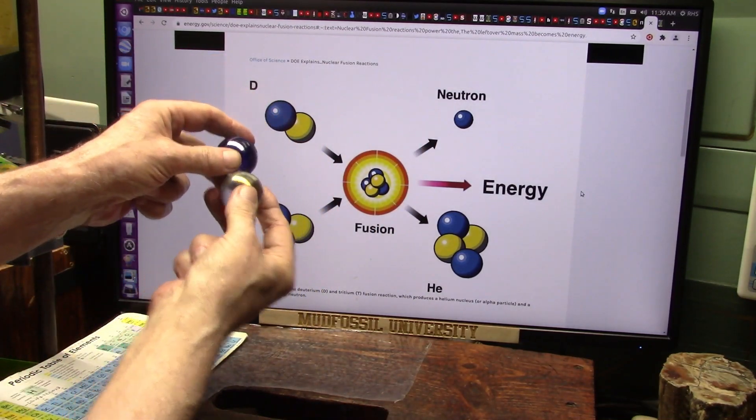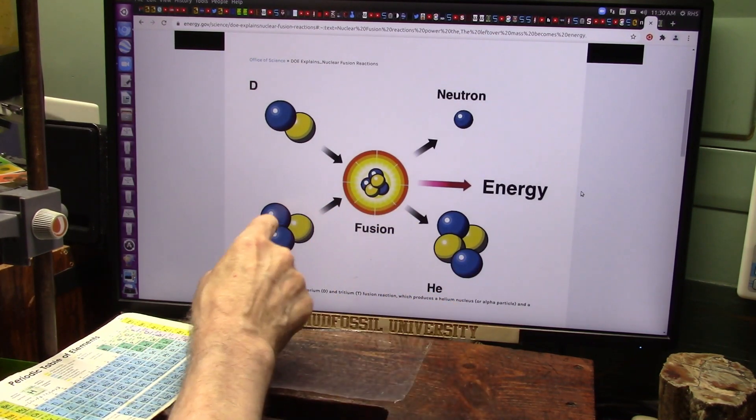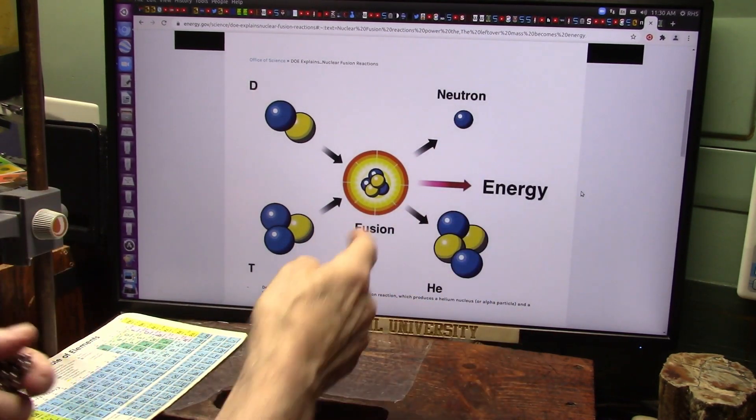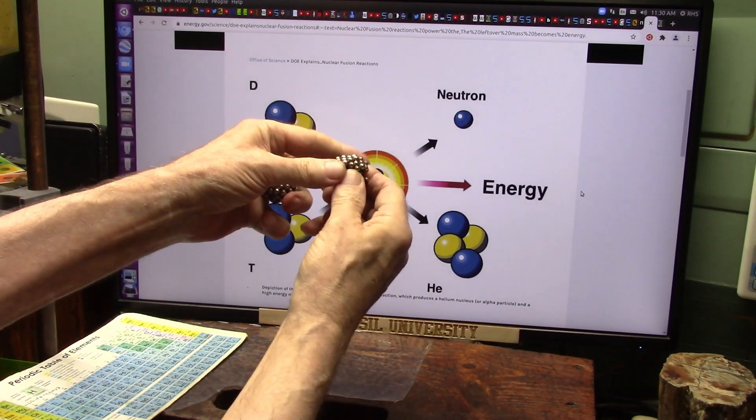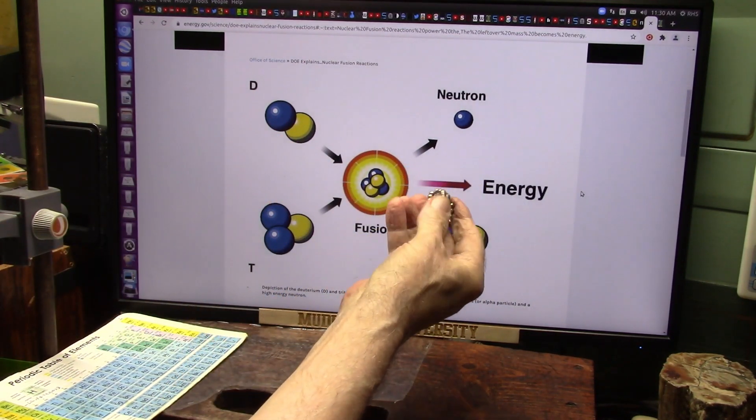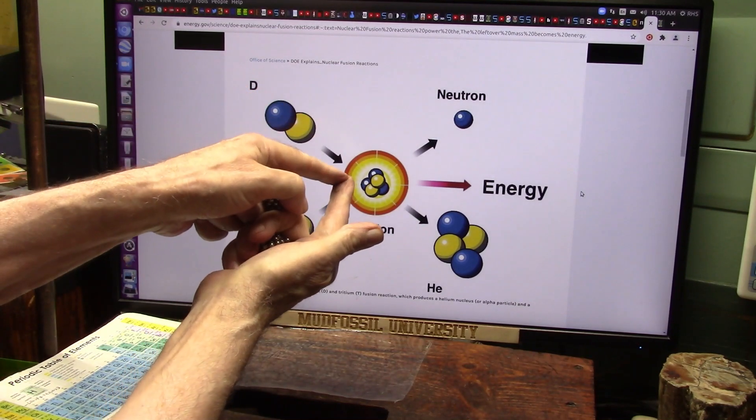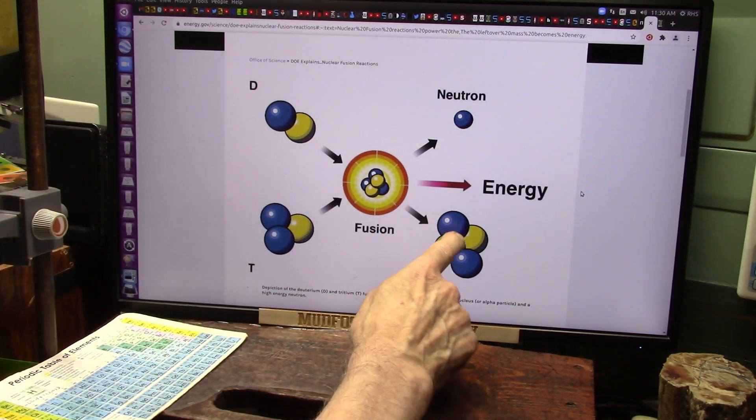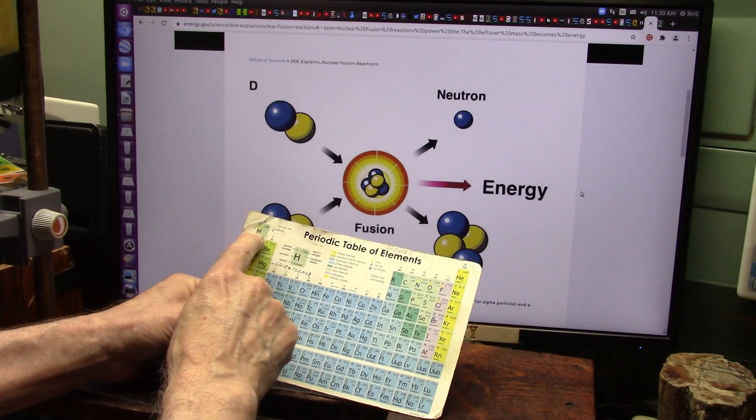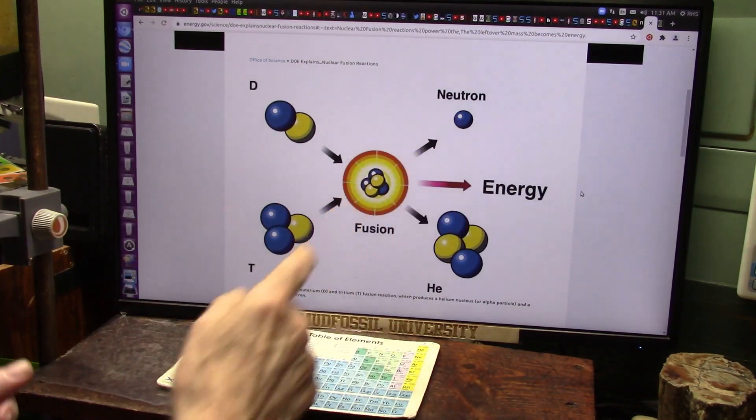Now, when they crash these together, what they're going to come out on the other end is a helium, which is these two and these two. And then they say they got a high energy neutron. Well, where did that come from? Why is the energy there? It's not a high energy neutron. It's one of these splashed into all of its bits and pieces, which is worth one neutron, which is about 1,836 electrons go flying off from that joining.